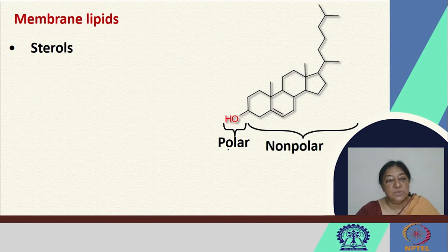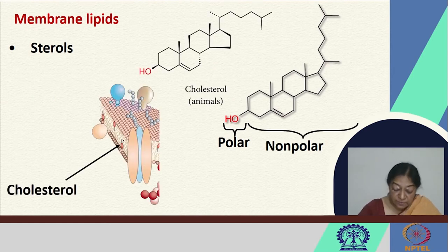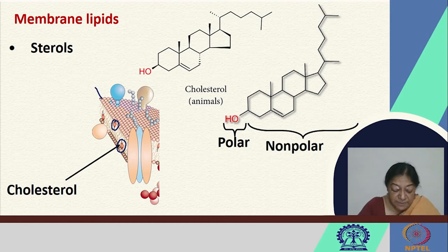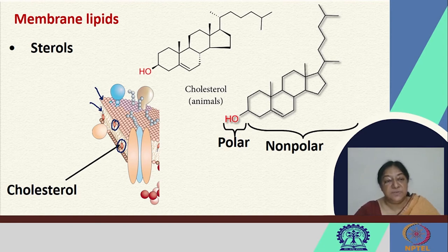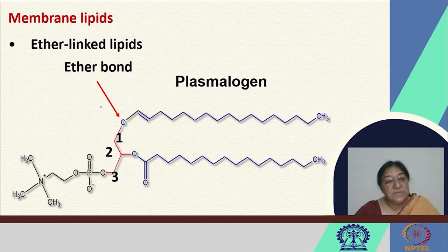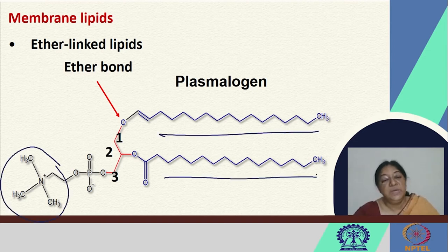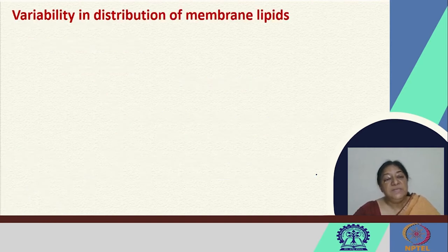We can also look at sterols present in membranes, such as cholesterol, which is part of the lipid or plasma membrane. The plasma membrane can therefore have different types of head groups and different types of tails, resulting in different properties. We can also have ether-linked lipids, where again we notice a polar head group with two hydrophobic tails.